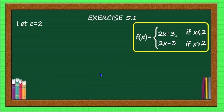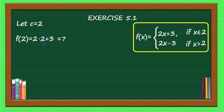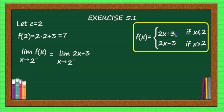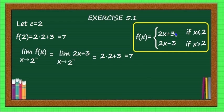Case 3: c = 2. First find f(2). Since f(x) = 2x + 3 for x ≤ 2, f(2) = 2(2) + 3 = 7. Now find the left-hand limit: as x → 2⁻, f(x) = 2x + 3, so the limit equals 2(2) + 3 = 7.